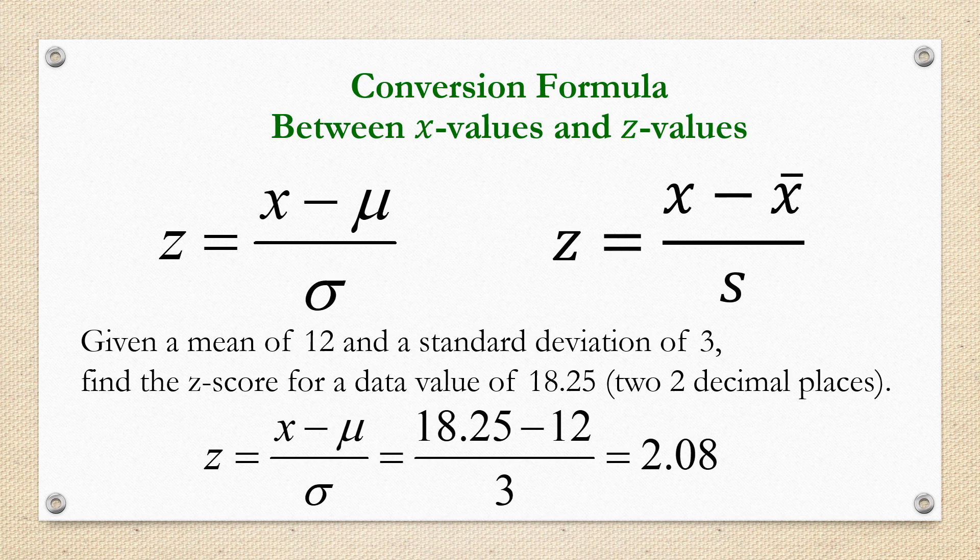To plug in, we would have 18.25 minus 12 divided by 3 equals 2.08. Make sure that you do the subtraction in the top of the fraction bar first before dividing.